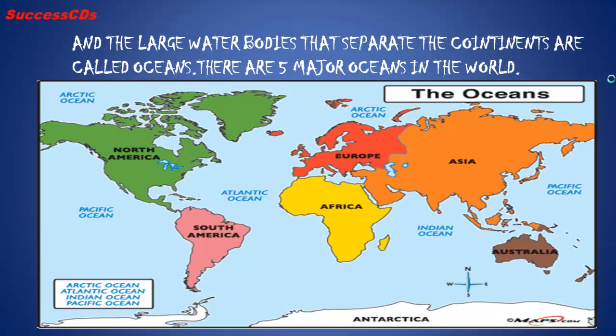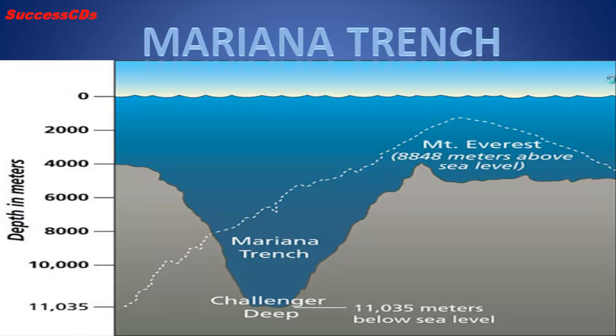The space between these land pieces filled up with water, and the large water bodies that separate the continents are called oceans. There are five major oceans in the world: the Arctic Ocean, the Atlantic Ocean, the Indian Ocean, Pacific Ocean, and Antarctic Ocean. The world's deepest trench lies in the Pacific Ocean and is called the Mariana Trench. You know, if Mount Everest was dropped into the Mariana Trench, then its peak would nearly be 2,000 meters underwater.